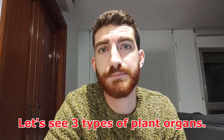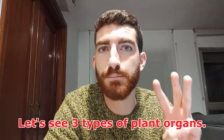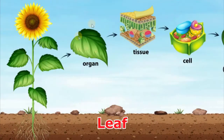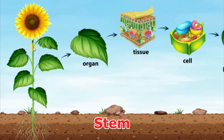Now let's go back to plants because we're going to study the three main organs that plants have. The first organ is a leaf — leaves are organs where food is made and they contain the chloroplasts, which are necessary for photosynthesis. The stem is another organ in a plant; it supports the plant to keep it upright.